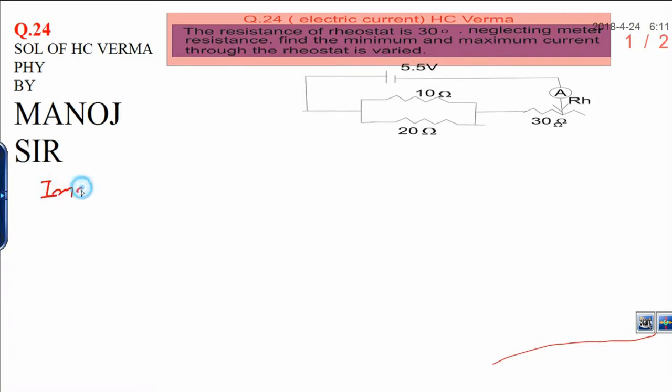First of all, you have to calculate the maximum current. According to Ohm's law, I equals V over R. If you want to calculate the maximum current, I need minimum resistance in the circuit. How do you get the minimum resistance? Let's see R minimum.